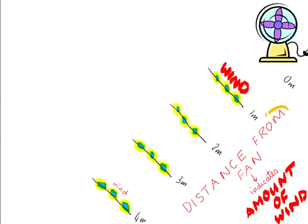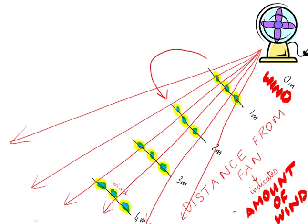Then we have this problem that the indicator, distance from fan, doesn't have a direct mathematical correspondence to amount of wind. If you double the distance from the fan, you don't halve the amount of wind because amount of wind decreases by the square of the distance from the fan. So you actually quarter the amount of wind by doubling the distance from the fan.